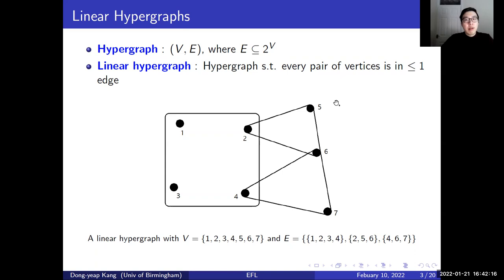The class of linear hypergraphs is a straightforward generalization of the class of simple graphs. Here we have a linear hypergraph with seven vertices and three edges such that every pair of vertices is in at most one edge.